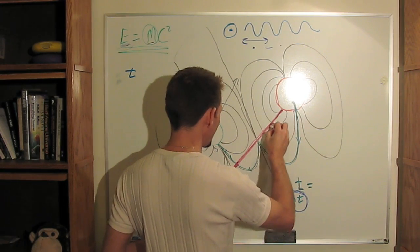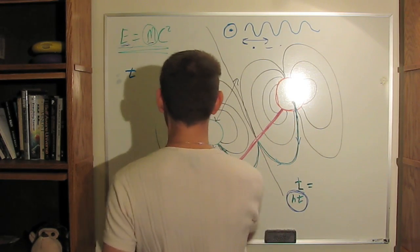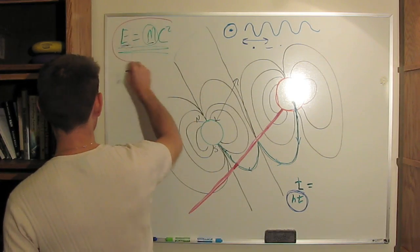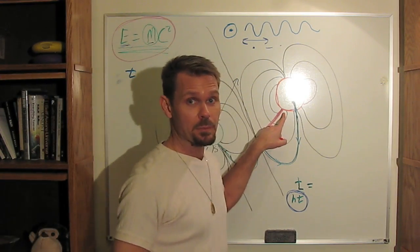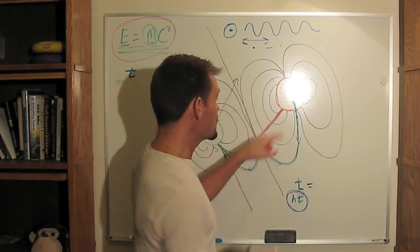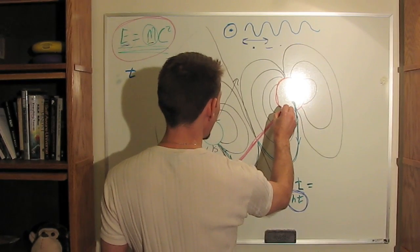because we get to see Einstein vindicated in a really big way because we get to see the matter-energy transformation relationship happening. The surface of the sun represents the fold in time-space.